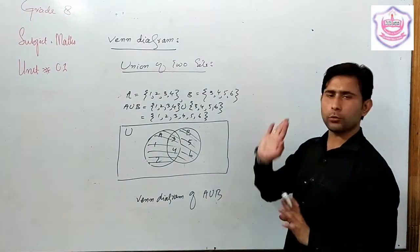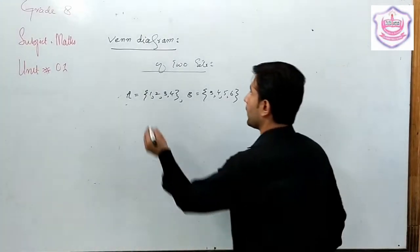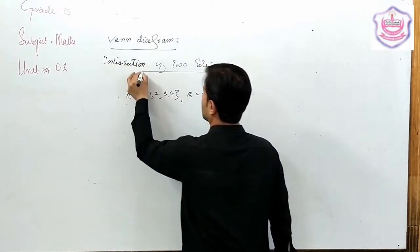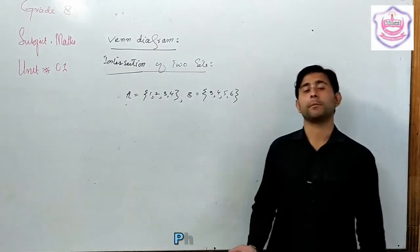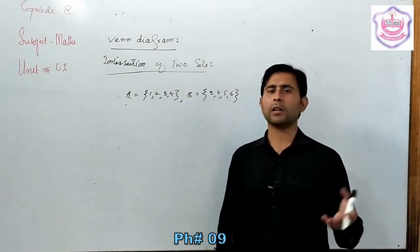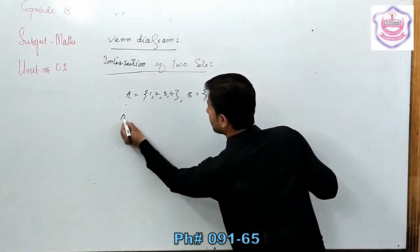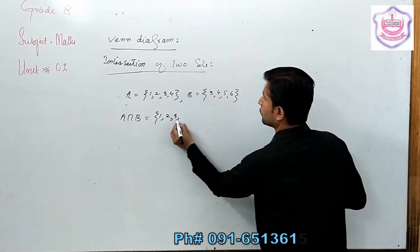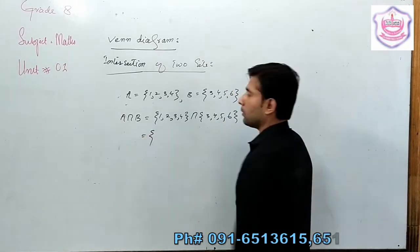Now we move to the intersection of two sets. The intersection means taking common elements from both sets. For set A = {1, 2, 3, 4} and set B = {3, 4, 5, 6}, A intersection B gives the common elements.